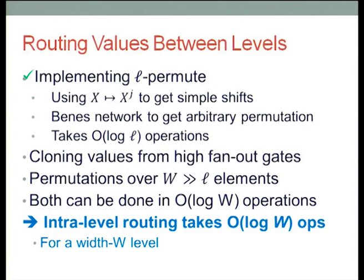Stepping back: what we want is routing values between levels. First, implement L-permute using the mapping x → x^j to get simple shifts, then use Beneš networks to get arbitrary permutations — all taking only O(log L) operations. Then you need cloning for high fan-out. Then implement permutations on arrays wider than L. All of that can be done in logarithmic time.